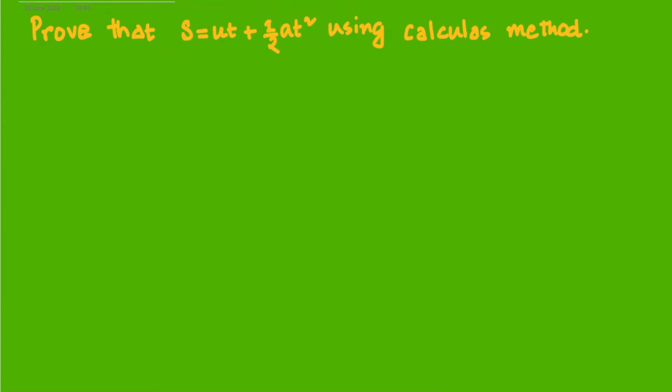We have to prove that s equals ut plus half at squared using the calculus method.